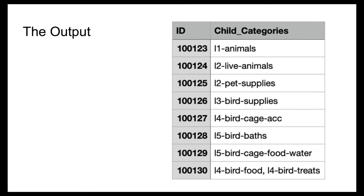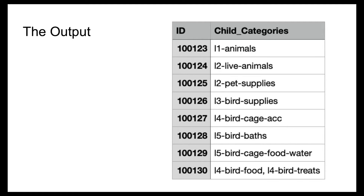The output that we expect from this exercise has the columns ID and a column called 'child categories'. The ID column contains the product numbers as seen in the input dataset, and the child categories column will have the codes of the categories that the products belong to. If a product belongs to multiple categories, the codes of those categories will be in the same column separated by commas.